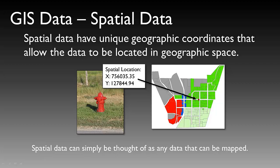Getting into GIS a little deeper and starting to scratch the surface: GIS data, or spatial data, is any kind of data that has a unique geographic coordinate allowing us to locate the data, an object, or an event in geographic space. The example here is a fire hydrant located in the town of Franklin, Idaho. It's on a street corner and has a spatial location. That XY value will become meaningful as we start to learn about coordinate systems. In a Cartesian coordinate system, or XY grid, we can put it on a map. Spatial data can be thought of as any data that we can actually map.